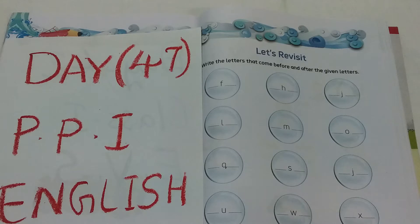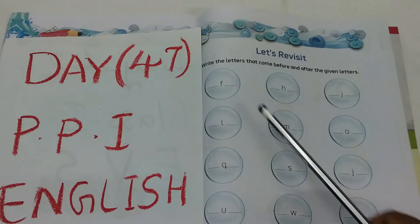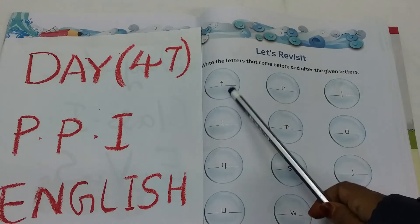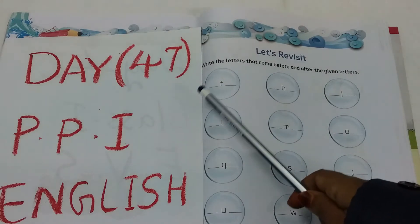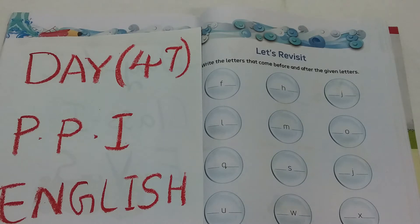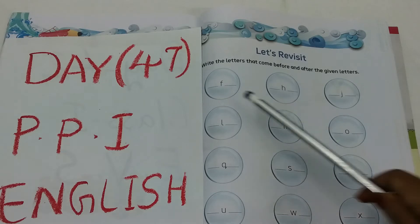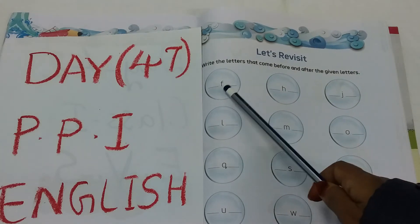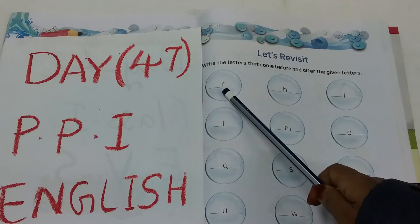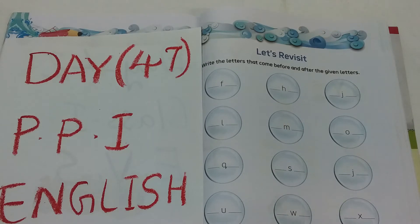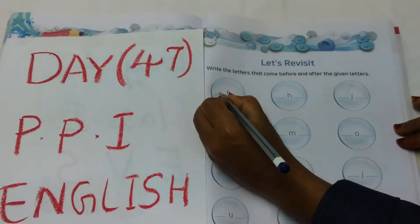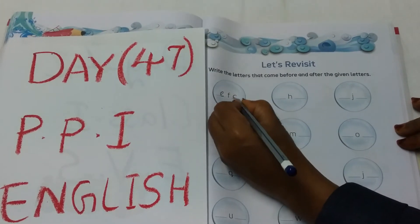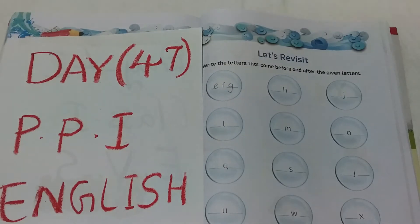What is missing? Here you can see letter F. What's missing? After F and before F. Write the letters that come before and after the given letters. Here we can see letter F. After F, G. But before F, E. E, F, G. Okay?